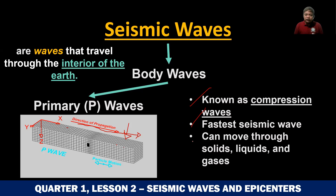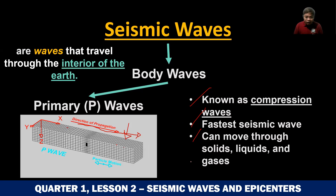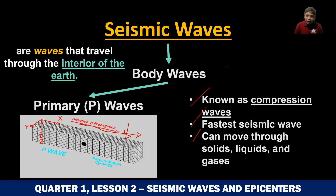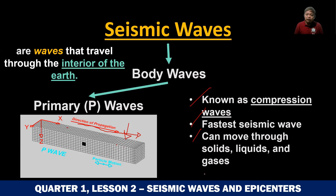Another characteristic of a P wave is that it can move through solids, through liquids, and gases — meaning it can move through solid rocks and even through liquid rocks. As we go deeper, remember that the temperature becomes higher — mas tumitindi yung temperature, mas umiinit — therefore rocks there become liquid. And of course, P waves can also travel through gases.